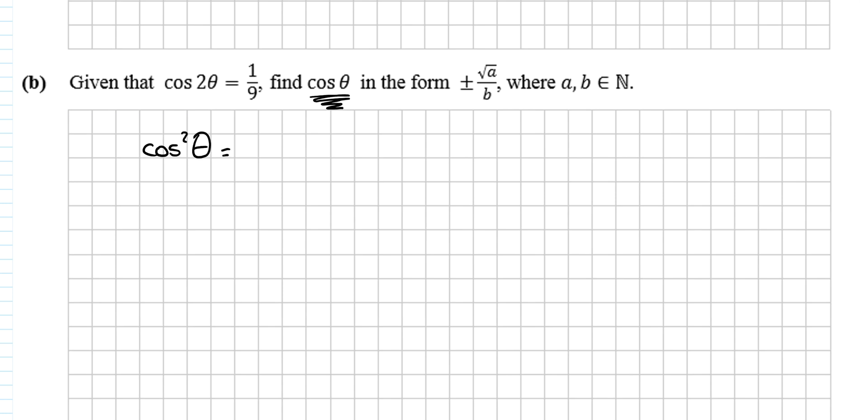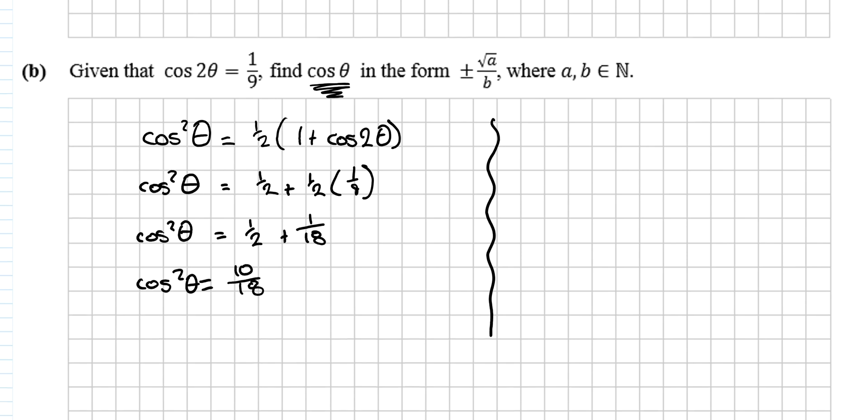So what do we get? We get cos squared theta is equal to a half, 1 plus cos 2 theta. So we get cos squared theta is equal to a half plus a half, multiplying the half in, and replacing the cos 2 theta with 1/9. So cos squared theta is equal to a half plus 1/18. Cos squared theta is equal to 10/18ths. And then how do you get cos on its own? You take the square root of both sides, so you get cos theta is equal to square root of 10 over 18. Cos theta is equal to plus or minus square root of 5 over 3.